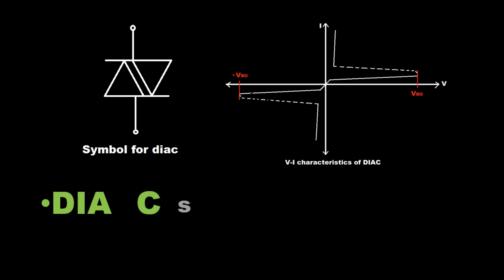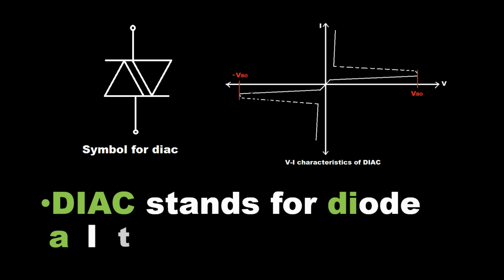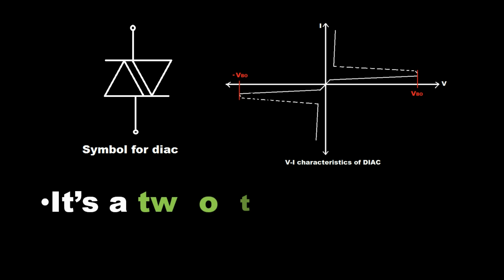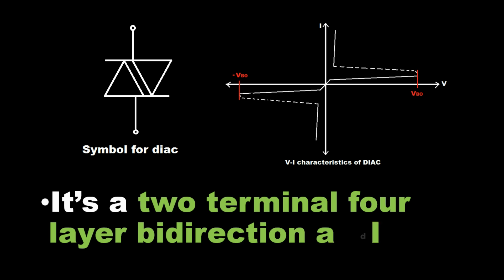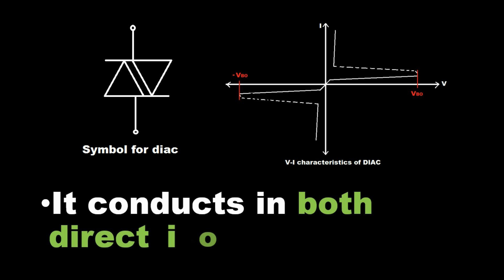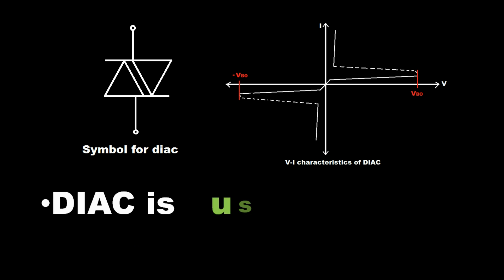TRIAC Triggering Circuit Using DIAC. DIAC stands for Diode Alternating Current. It's a two-terminal four-layer bidirectional device. It conducts in both directions. DIAC is used for triggering TRIAC.